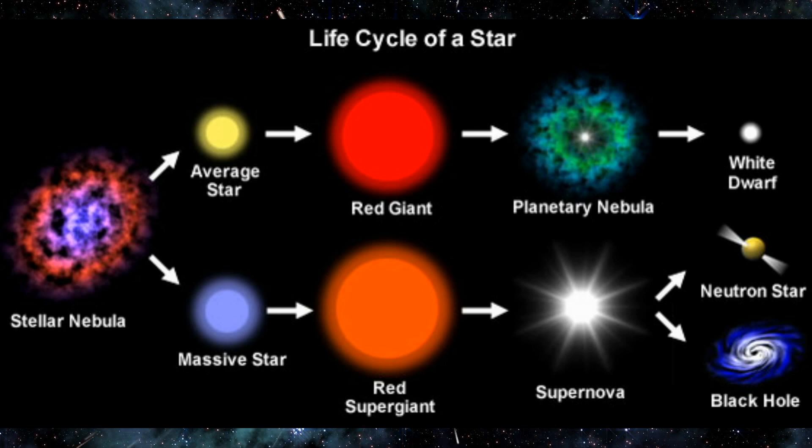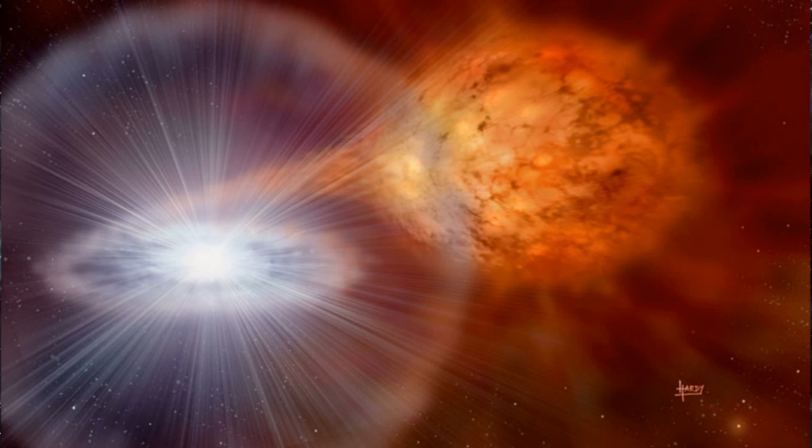After exhausting its core hydrogen, the larger star swells into a red giant. If the stars are close enough, the red giant's expanding outer layers can engulf its smaller companion. The red giant starts siphoning gas from its smaller companion. This stolen fuel can reignite fusion in the red giant's outer shell and contribute to its growth.